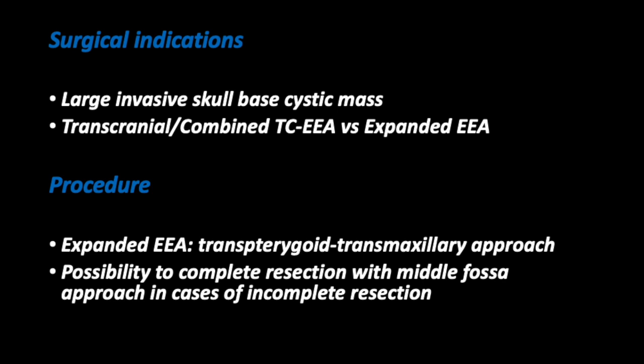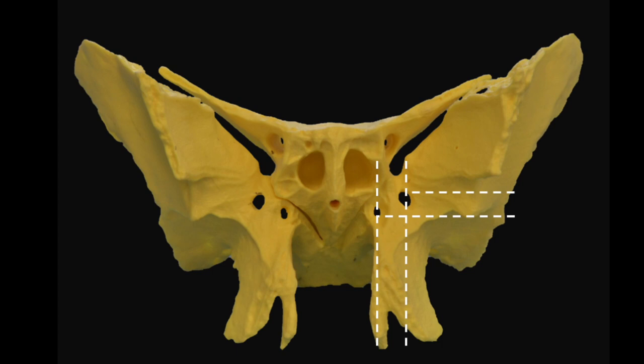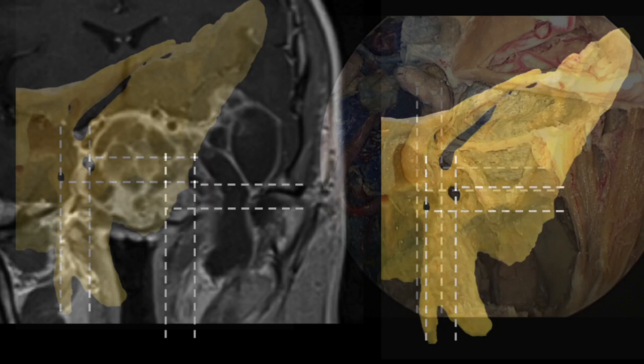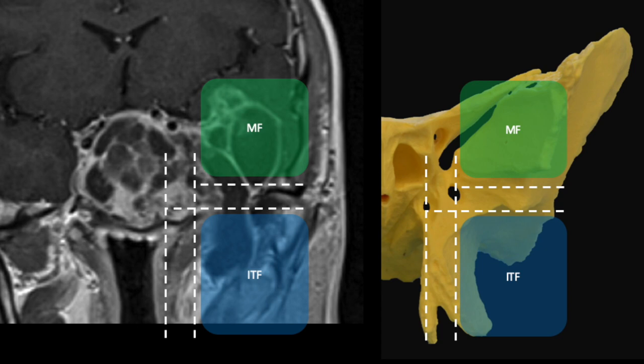We initially considered a preauricular infratemporal fossa access to the tumor, but decided to perform an expanded endonasal approach in order to reach all compartments of the lesion and optimize complete resection. We explained to the patient that if total resection was not achieved, we could complement with a transcranial approach. We then mapped the tumor in relation to the landmarks of the skull base. The middle cranial fossa component is located above the petrous internal carotid artery and the infratemporal component below it. We then defined those landmarks and proceeded to perform the surgery.